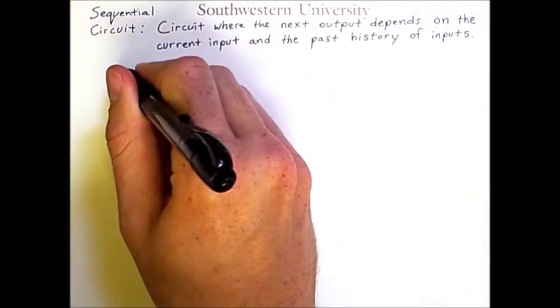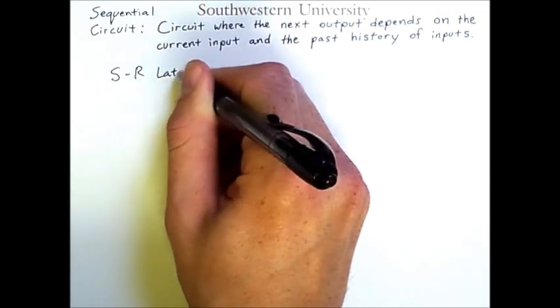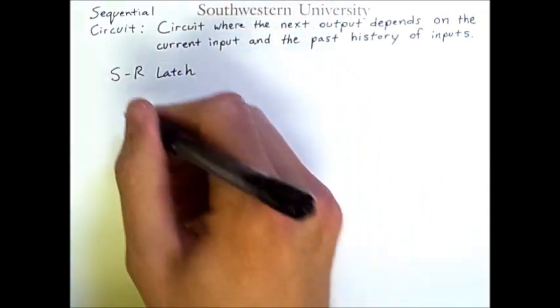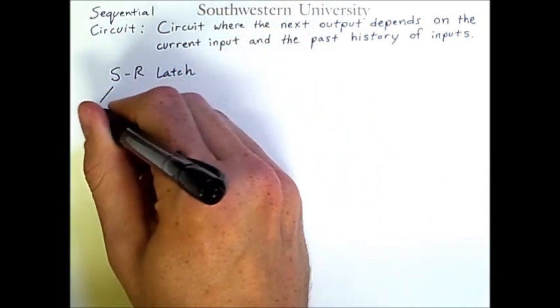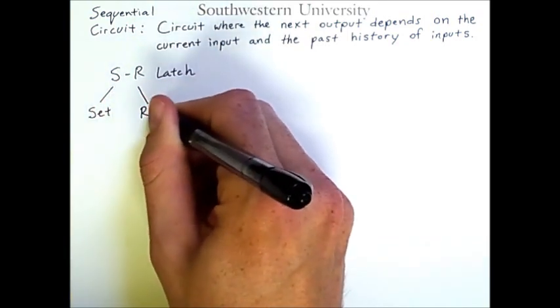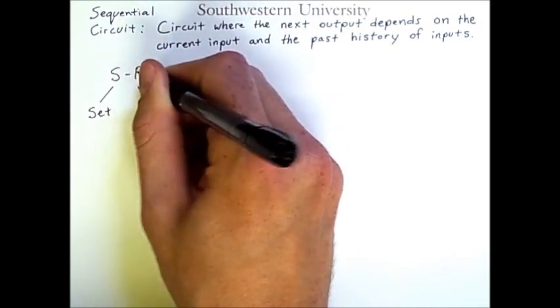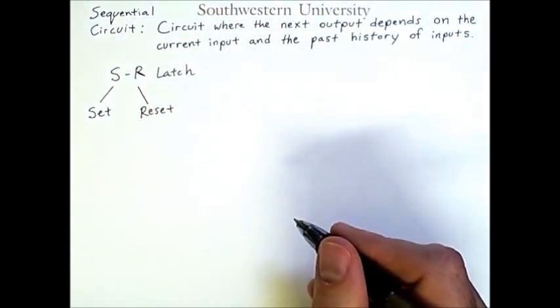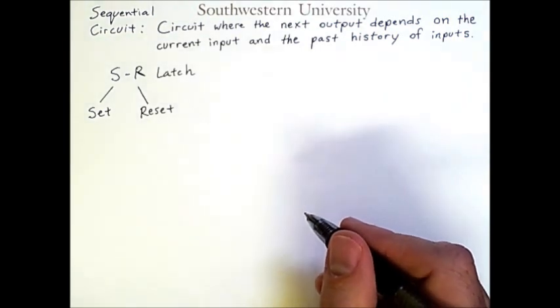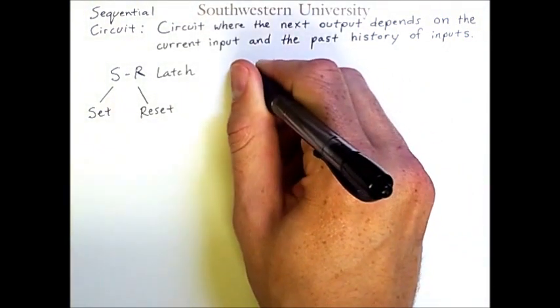A common example of this is an SR latch, also known as an SR flip-flop. The S stands for set and the R stands for reset, and this circuit basically implements a one-bit memory. Here is one way of writing it out.